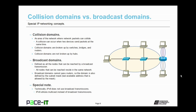A broadcast domain is defined as all the nodes that can be reached by a broadcast transmission. All the nodes that can be reached reside in the same network. Broadcast traffic cannot pass routers, so the domain is also defined by the subnet mask, and that subnet mask defines the network. It's worth noting that IPv6 does not use broadcast transmissions — IPv6 replaces broadcast transmissions with multicast transmissions.